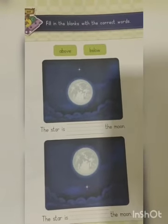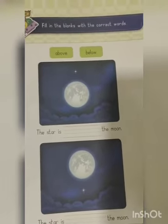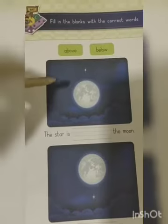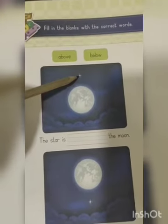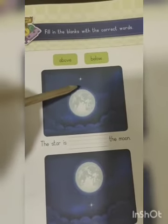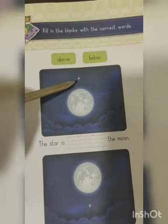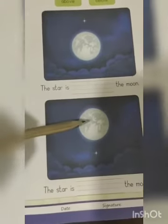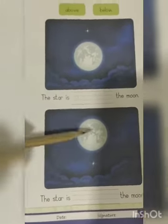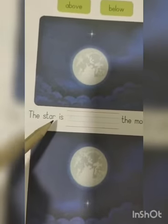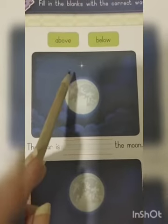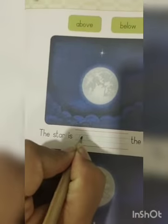Now we will move on to the next worksheet: fill in the blanks with the correct words — above or below. In this you can see two pictures. In the first picture, the moon is below the star, or the star is above the moon. In the next picture, the star is below the moon. So in the blank — the star is ___ the moon — we can see the position is above the moon, so we write 'above'.